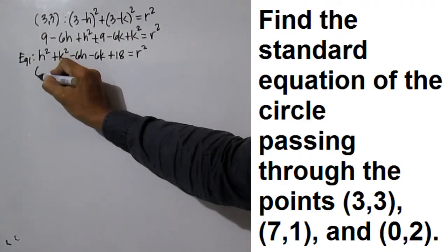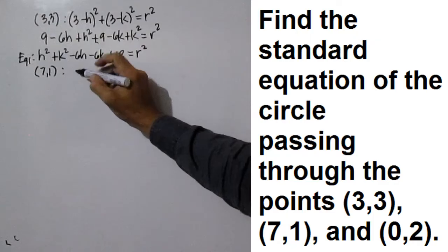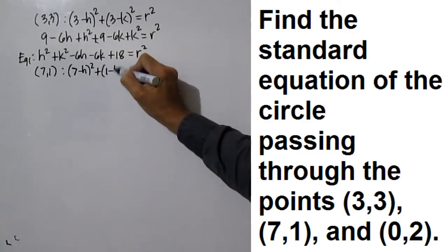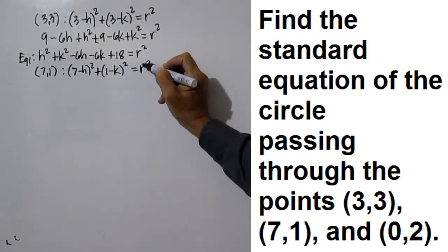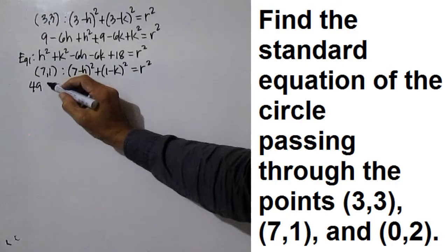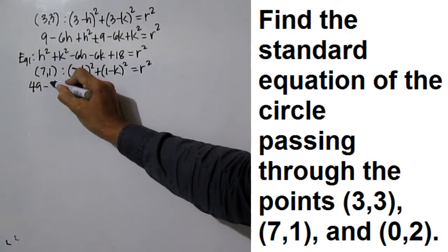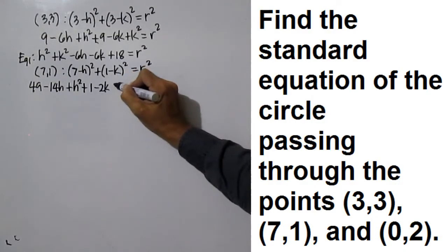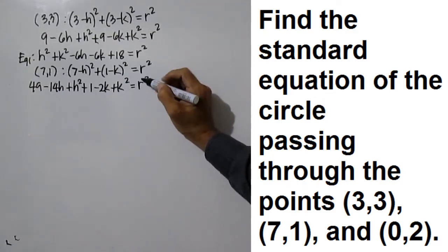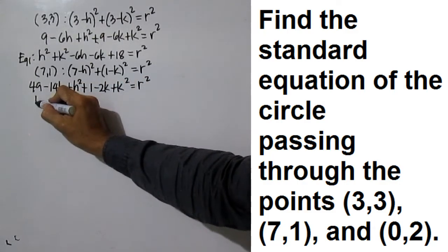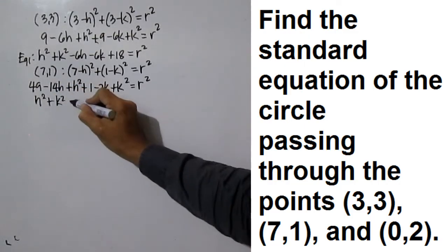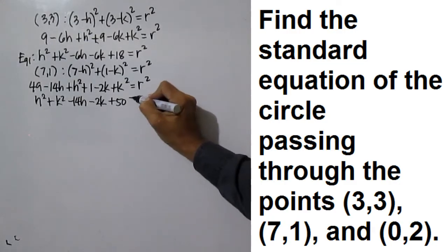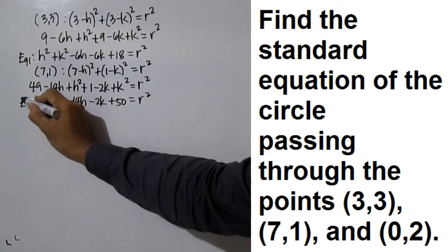The next point is (7, 1): (7 minus h) squared plus (1 minus k) squared is equal to r squared. Squaring the binomials: 49 minus 14h plus h squared plus 1 minus 2k plus k squared equals r squared. This is equation 2.